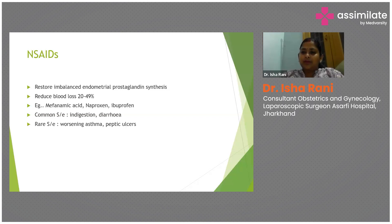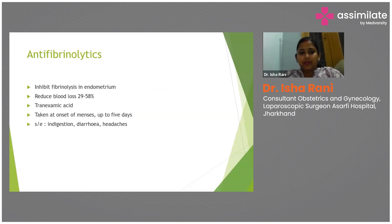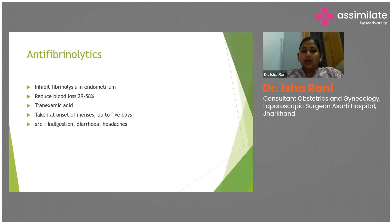If someone has asthma or peptic ulcer disease, caution regarding NSAIDs must be advised. Anti-fibrinolytics inhibit fibrinolysis in the endometrium and reduce blood loss by 29 to 58%. Tranexamic acid is the most commonly used drug, taken from the onset of menses for up to five days or less if bleeding is controlled. Side effects include indigestion, diarrhea, and headaches.